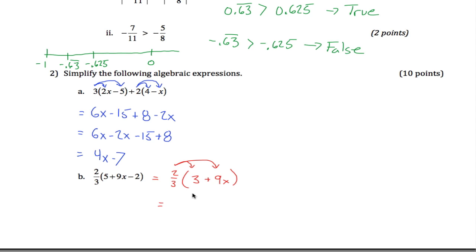2 thirds times 3, sorry about my dog, 2 thirds times 3 is just 2. And 2 thirds times 9x is 6x. And I'm going to go take care of my dog. That's the end of this problem and the end of this quiz.